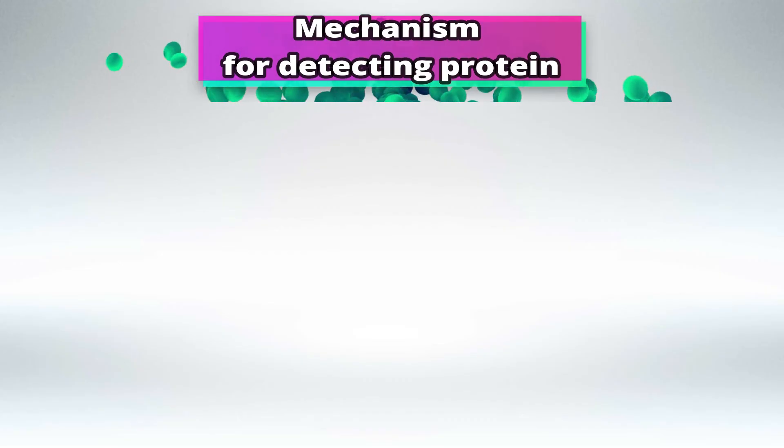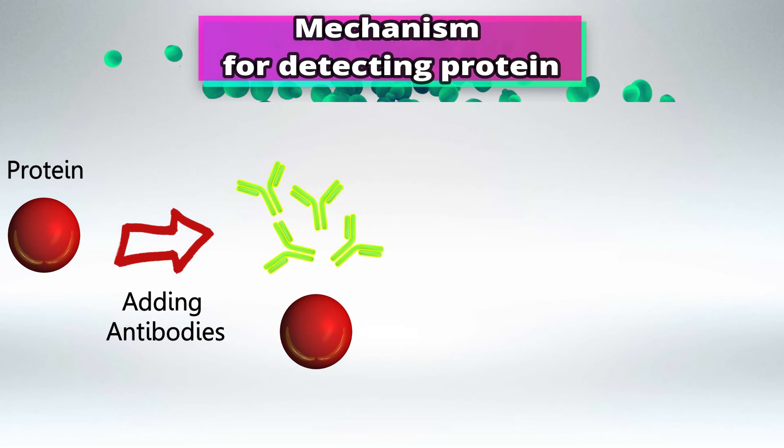Now the process of detecting a specific protein is a little bit different. We start off with a sample that may or may not have the certain protein that we want. Say for example, a sample of cells that may or may not have HIV proteins. We'll add in antibodies to HIV proteins. And if the sample did in fact have HIV proteins, these antibodies will link to this protein and we will be able to see them.